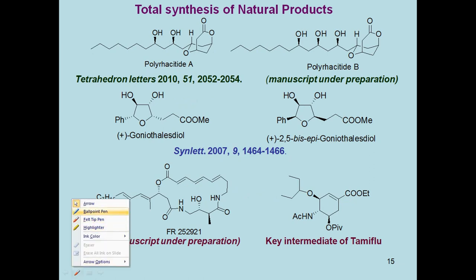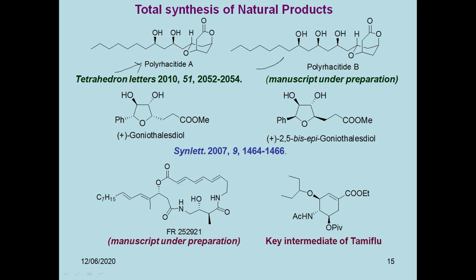Here I am showing the structures of the target molecules. The first one is Polyhastate A, the second one is Polyhastate B, the third one is Goniothalamol Diol, the fourth one is epi-Goniothalamol Diol, and the fifth one is FR-252921, which is the key intermediate of Tamiflu.